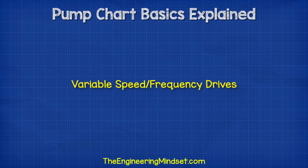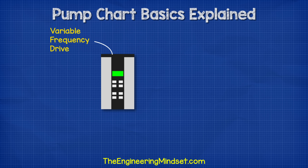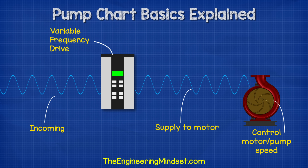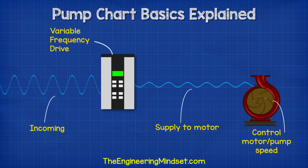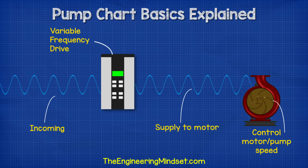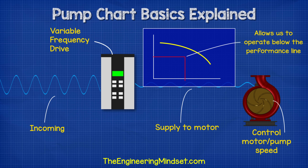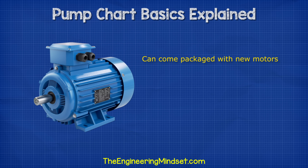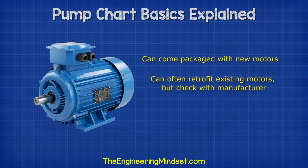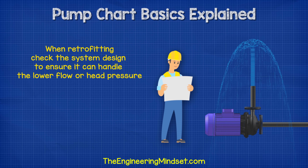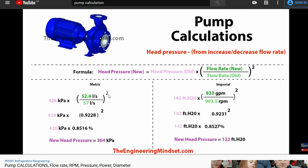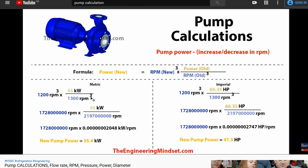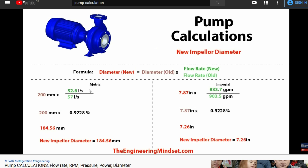Variable speed or variable frequency drives. Another option we have is to use a variable frequency, or variable speed drive. This basically takes the electrical supply and alters it to reduce the voltage and frequency, which therefore alters the power of the motor and the speed of the pump. We can increase or decrease the speed via the controller to better improve our pump match and therefore operate nearly anywhere in the region below the curve. These are only really used on larger pumps, typically over 2kW in size. They do come pre-installed with new pump motors or you can also retrofit existing pumps, but you should check with the manufacturer first to ensure compatibility. You must also check the system design to ensure it can handle a lower flow rate and head pressure. To obtain the performance details for variable speed pumps, we have to calculate the values using the pump affinity laws — we've covered this previously in worked examples, links down below.